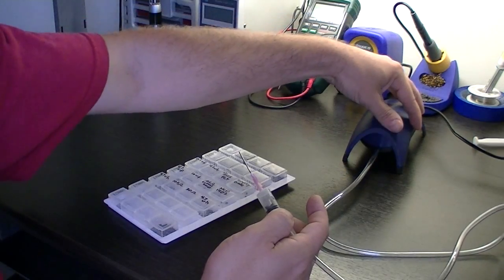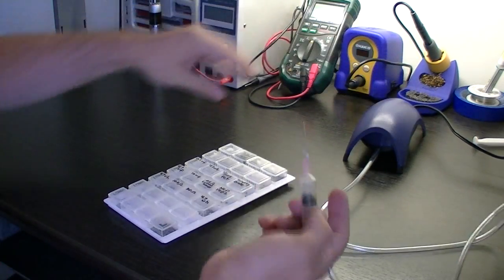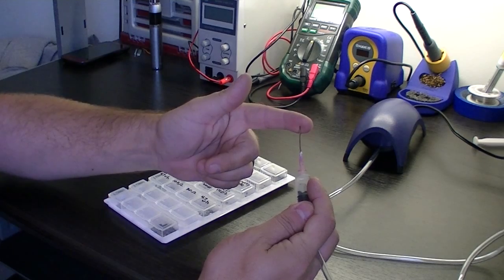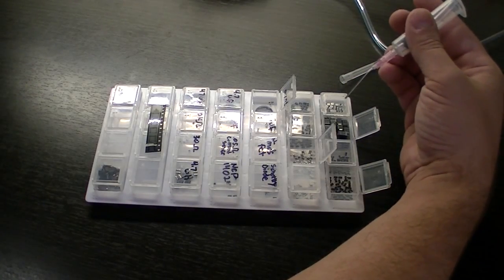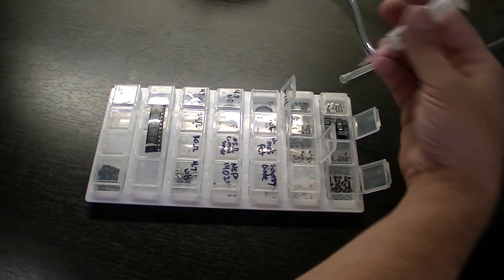Once you plug the air hose into your compressor and turn it on, now you have a vacuum. And now you can pick up capacitors as big as a 2917 with ease.